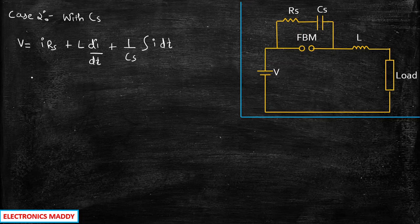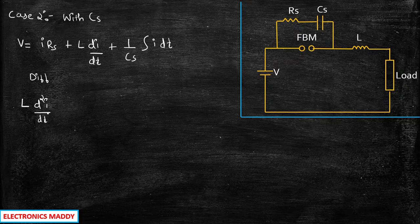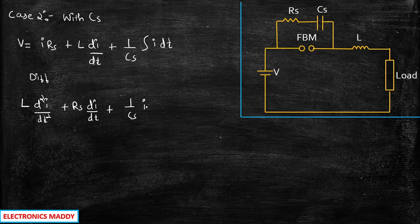When we differentiate this KVL equation with respect to T, we get: L × (d²I/dt²) + RS × (dI/dt) + (1/CS) × I = 0. The integration of I with respect to T leaves only I, and the right-hand side is zero because voltage is a constant — differentiating a constant with respect to T gives zero.